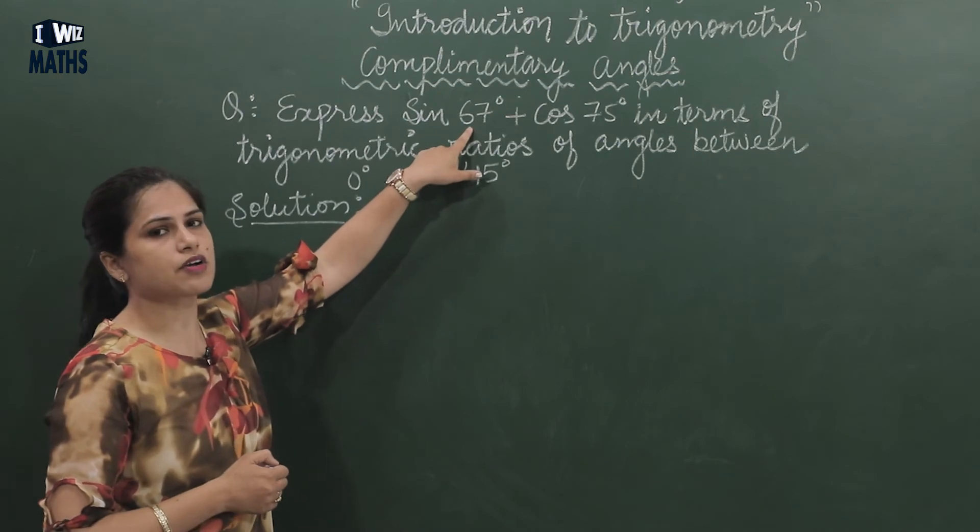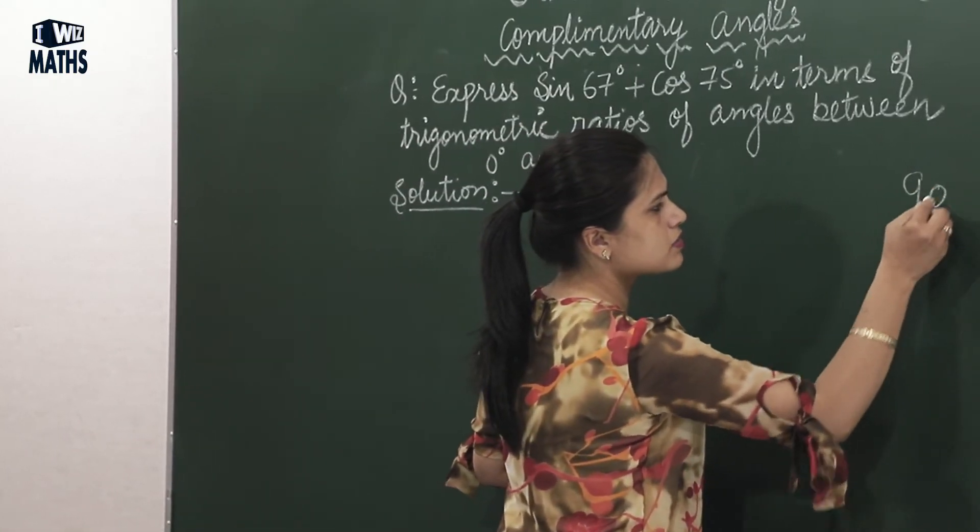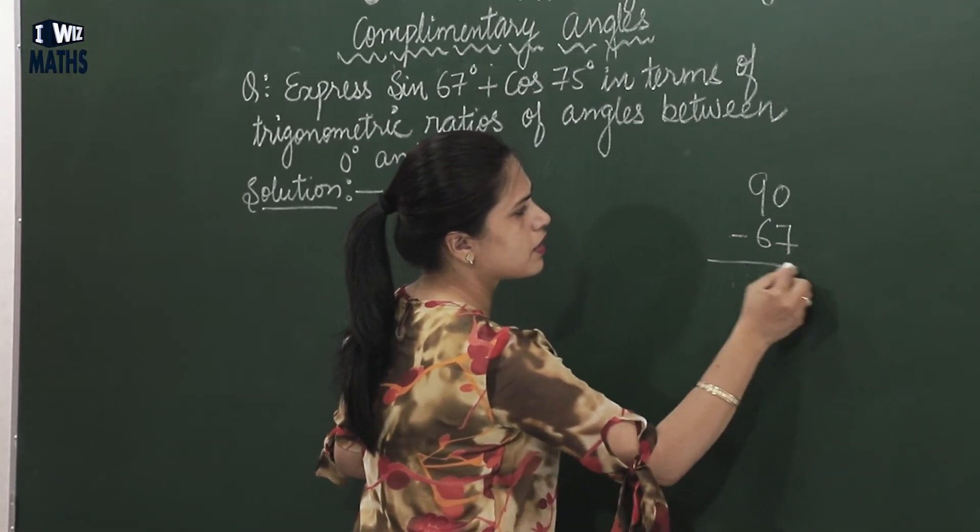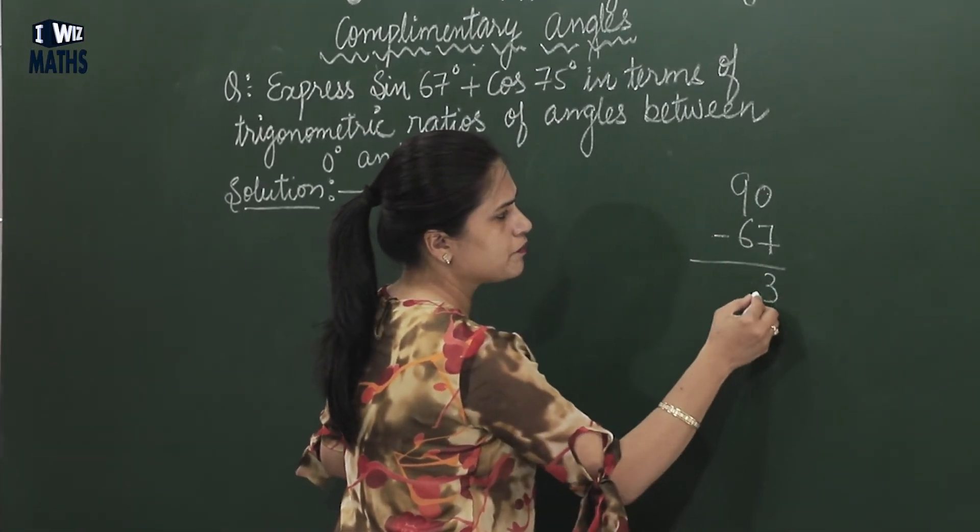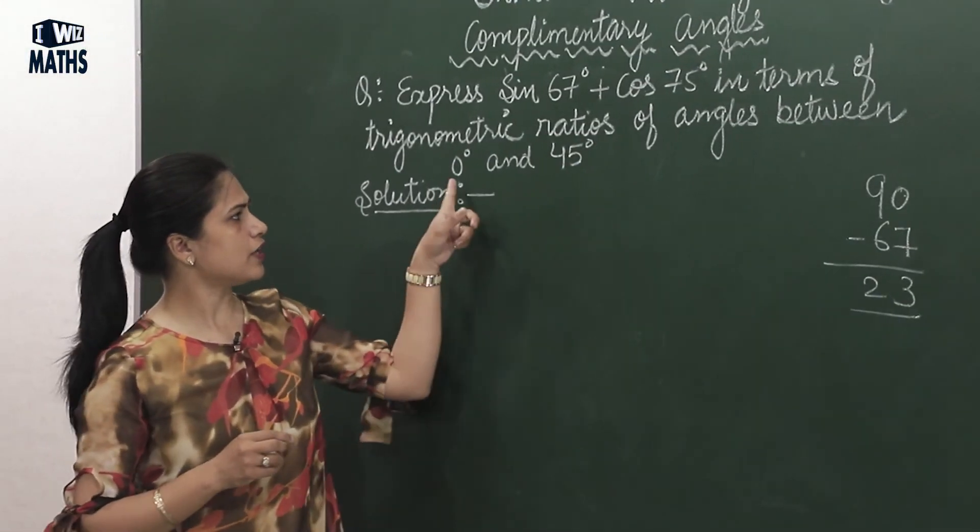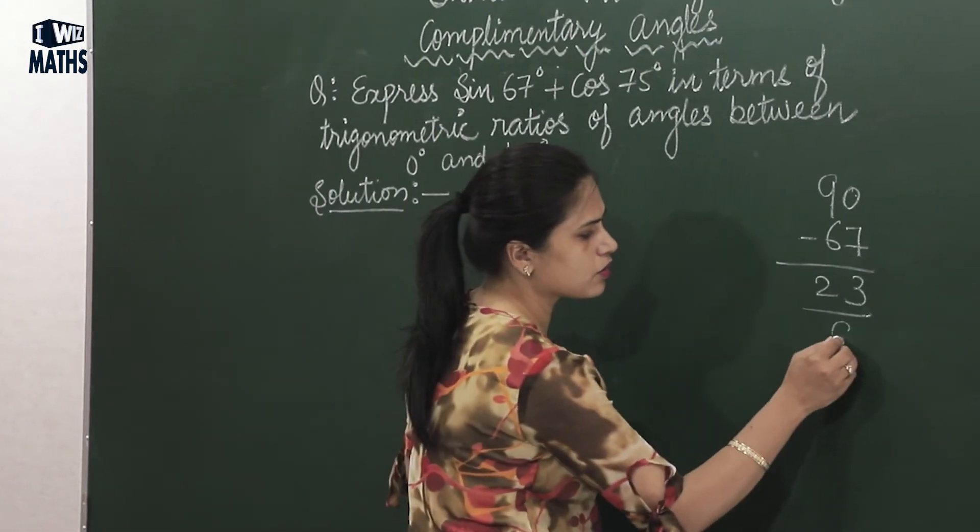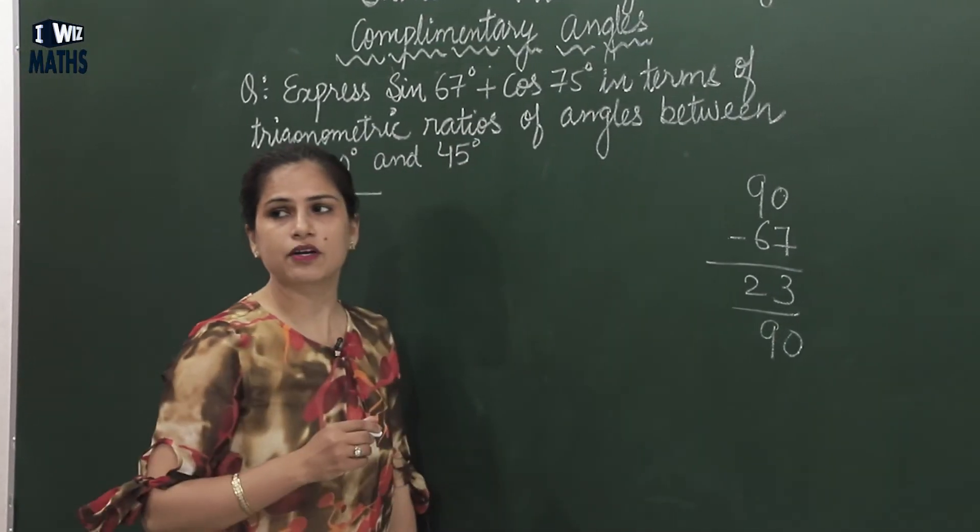So between these, how can we bring the angles down? How can we bring 67° down, how can we bring 75° down? And what concept is that? That is our complementary angles. Meaning we'll find the complementary angle of 67. That is calculated as, you know, we need to subtract from 90: 67. We'll get 10 minus 7 is 3, 8 minus 6 is 2. Meaning 67's complementary we got as 23, and that 23 is in the range between these two. Similarly, if I talk about 75, 75's complementary angle will be...